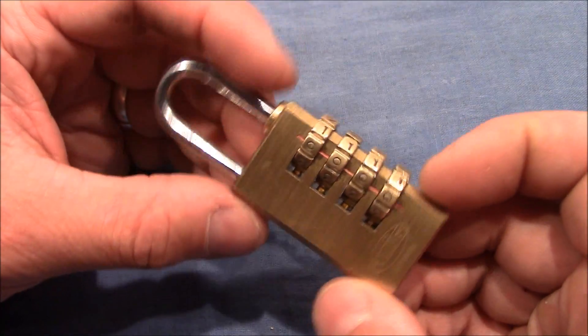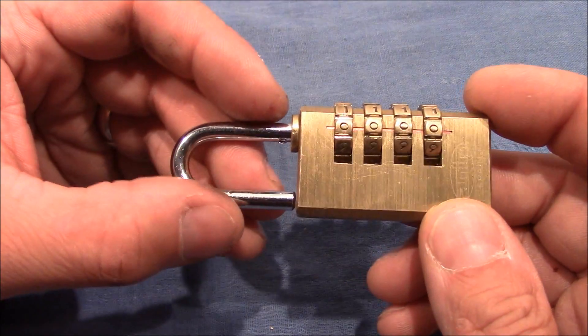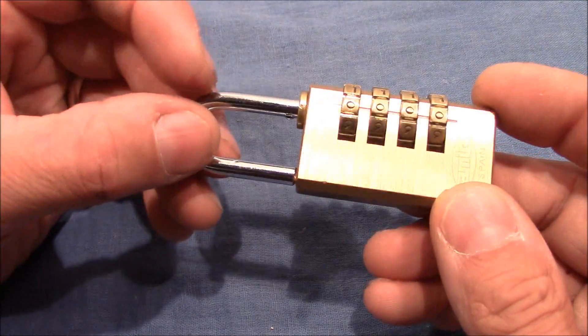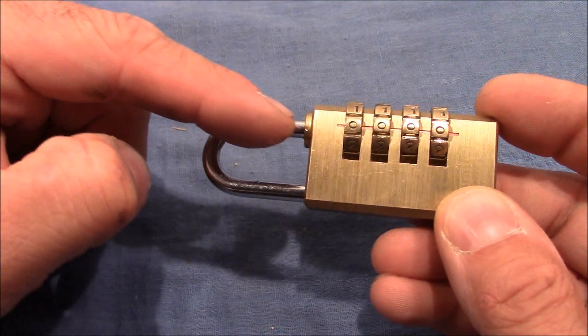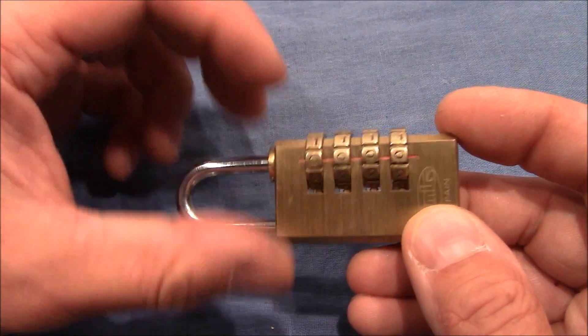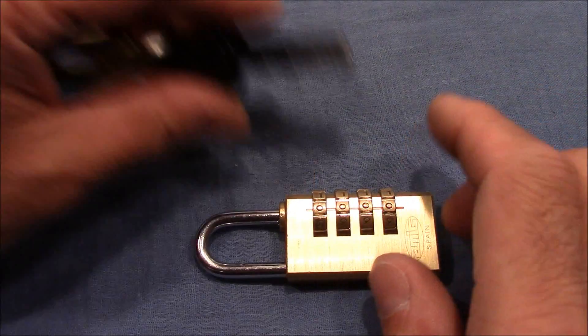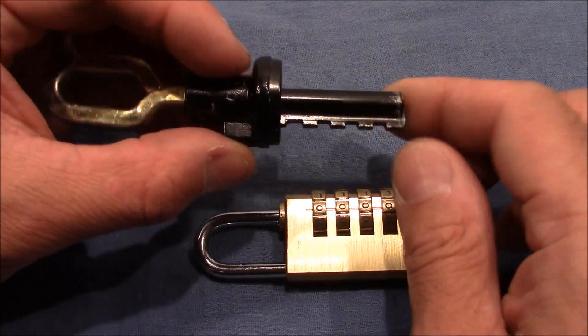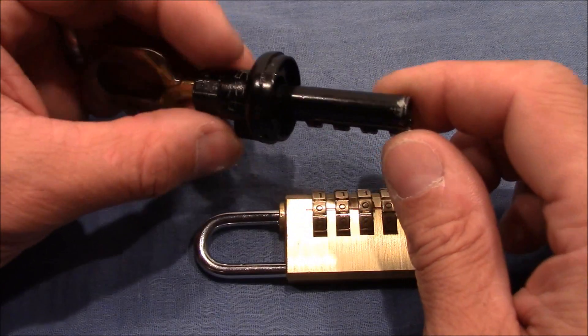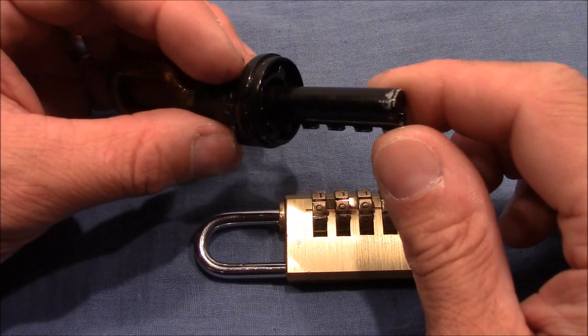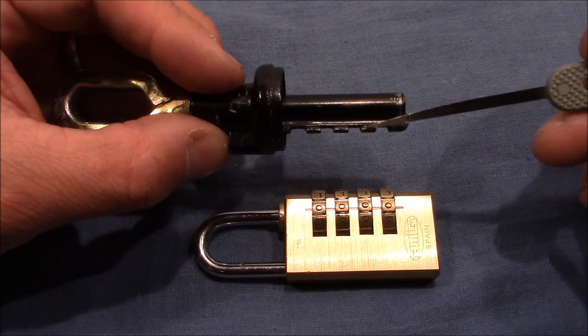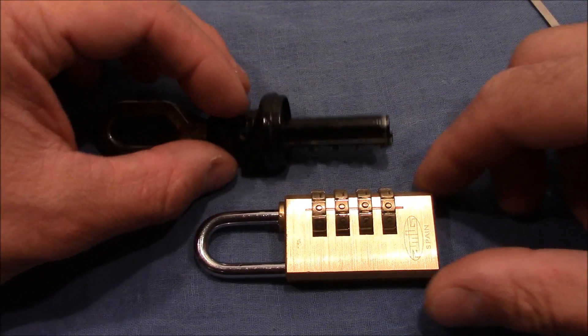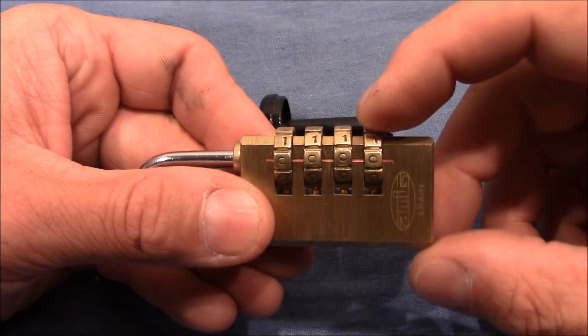So let's start with explaining how these locks work. You can see the shackle which is currently pulled out and the part that goes inside the lock looks similar to this. That's a big bolt from a bicycle lock and you can see the teeth and these teeth interact with the inner wheels of the lock.